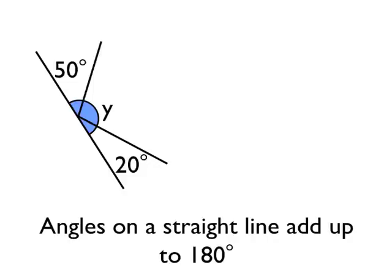We're going to calculate what angle Y must be by using our angle rule. Angles on a straight line add up to 180 degrees. So we can say that 50 add 20 add Y is equal to 180.